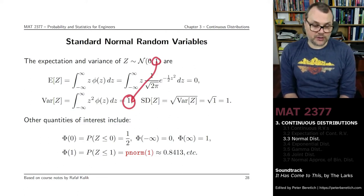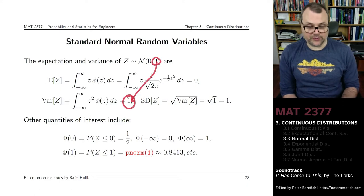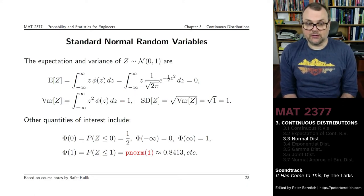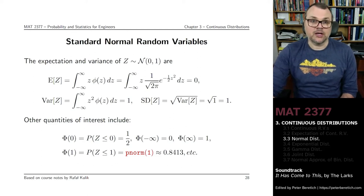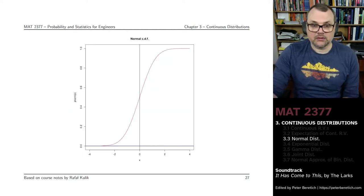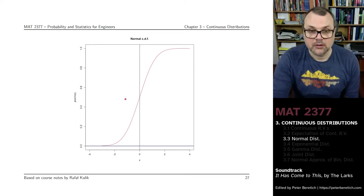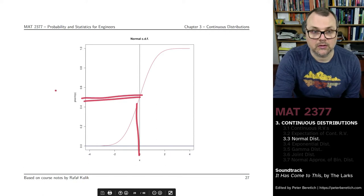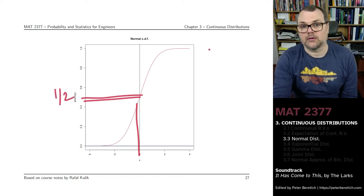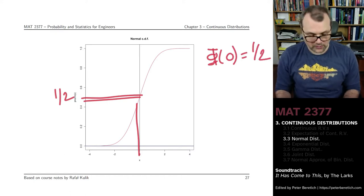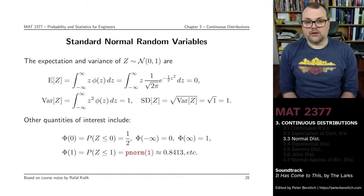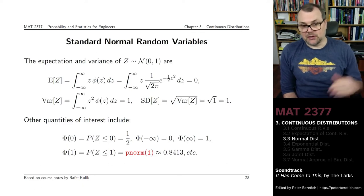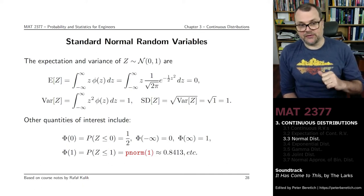There are other quantities you can compute, like the CDF at 0. That's the probability that your random variable would be smaller than 0, and that value is 1/2. The limits are: as x goes to minus infinity the CDF goes to 0, and as x goes to positive infinity it goes to 1.